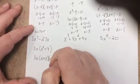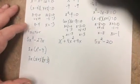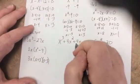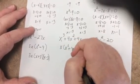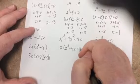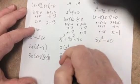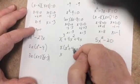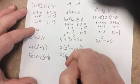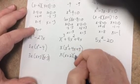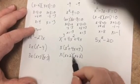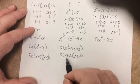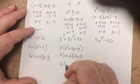This one, factor out an x, so it'd be x squared plus four x plus four. Then the factors of four that add up to four would be x plus two times x plus two. Can I do any more? Sure, that's something times itself—it's a square.